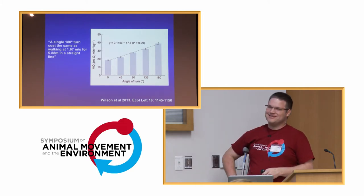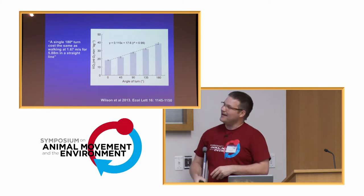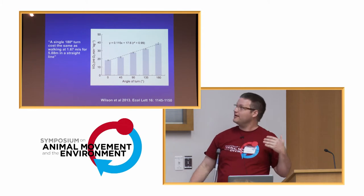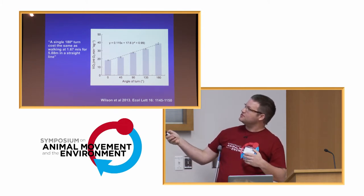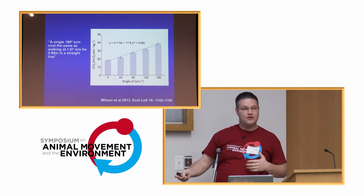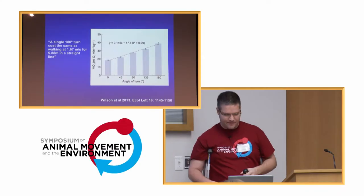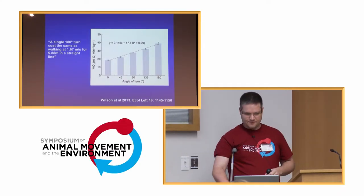This is Rory Wilson, one of my close collaborators. What they did is look at human subjects, measuring oxygen consumption over the angle of the turn to see how expensive it is for an animal to turn. They found that a single 180-degree turn costs the same amount of energy as basically walking six meters further. So we have empirical data showing how expensive turns are.